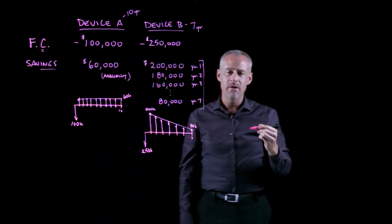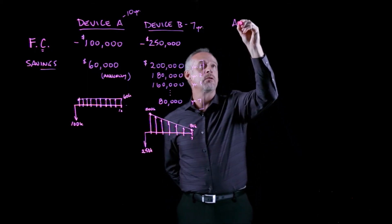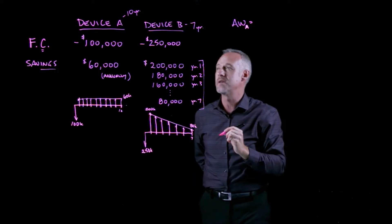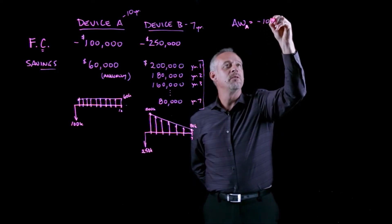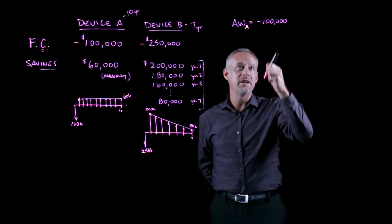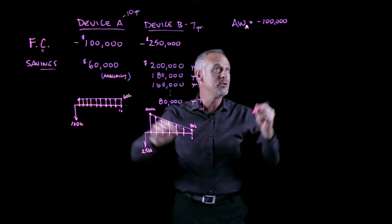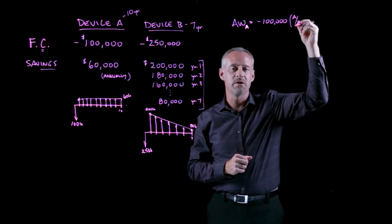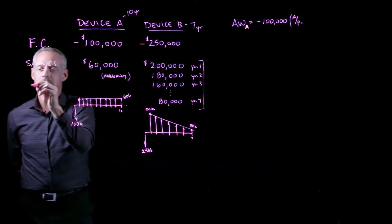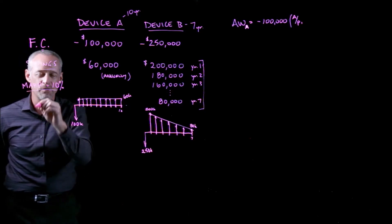Let's do an annual worth calculation for the value of each equipment purchase. For the annual worth of device A, we have an investment of $100,000 at time t equals zero — that's a present value P. If I need to convert this $100,000 to an equivalent yearly cost over ten years, I can use the A given P compound interest factor. We're told to use a minimum attractive rate of return of 10%.